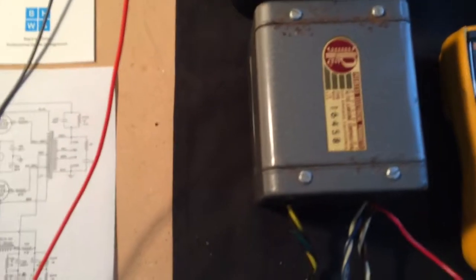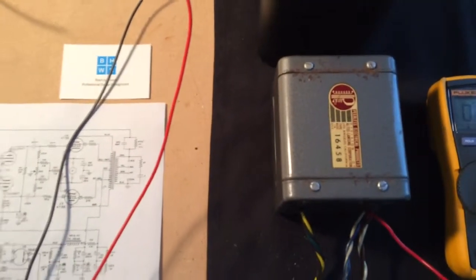Hi, this is Ben with Ben Hayes Web Sales. I'm just going to do a test here of this Peerless 16458 output transformer. This is from a Heathkit W-5M monoblock.